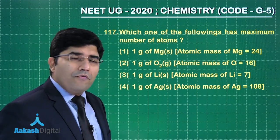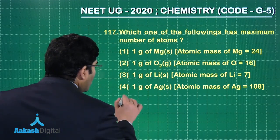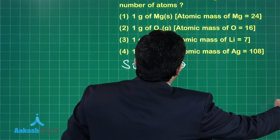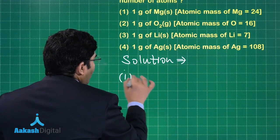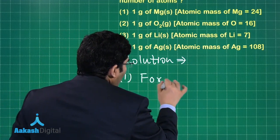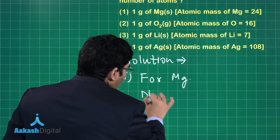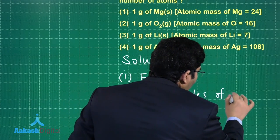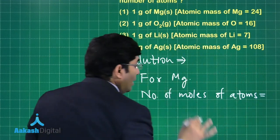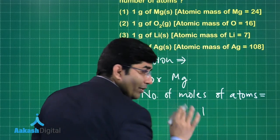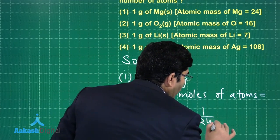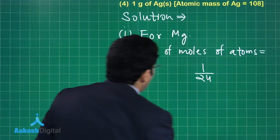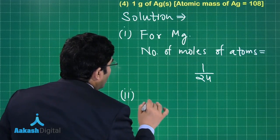So let's find out the solution. Number of moles of atoms in the case of magnesium, that is the first one. For magnesium, number of moles of atoms, that is one, the given weight divided by 24. This is the number of moles of atoms.